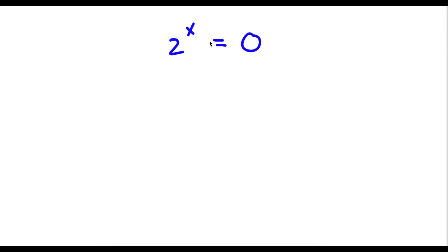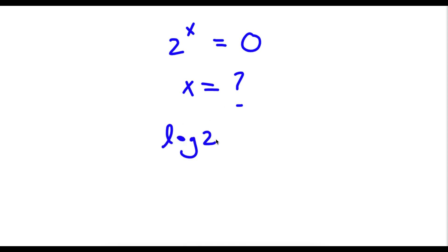Alright, so I have 2 to the power of x equals 0, and I want to find the value of x. So first off, I'm going to take the log on both sides. So now I have log 2 to the power of x is equal to log 0.